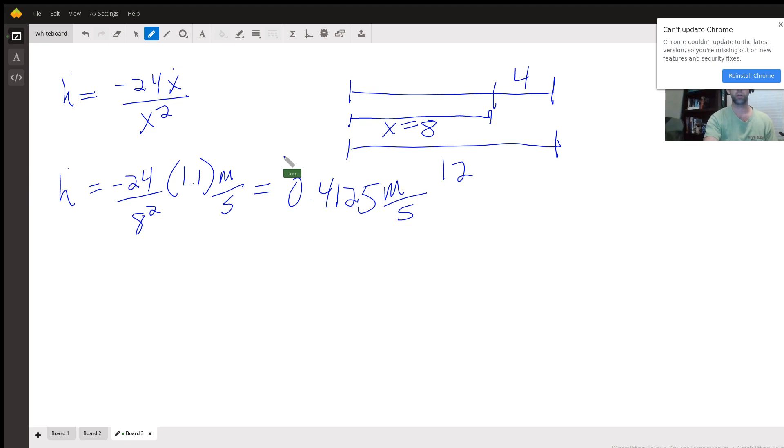So that should be our change, and that should be negative, I got my negative out front. So that should be how fast the height of the shadow is changing.